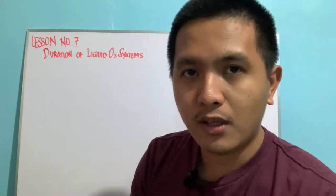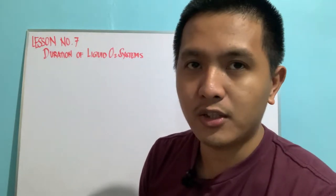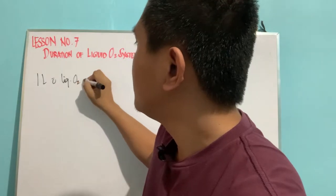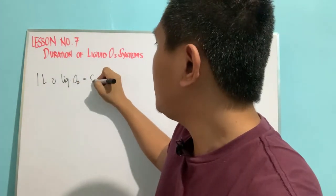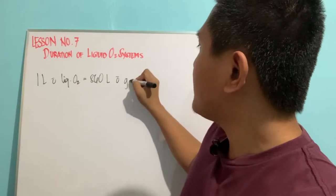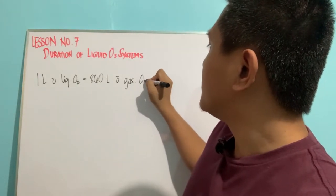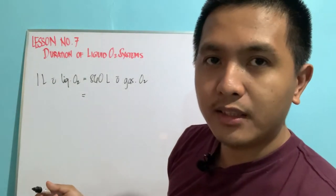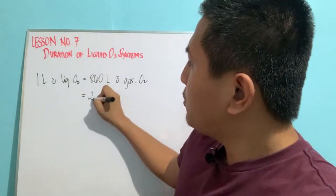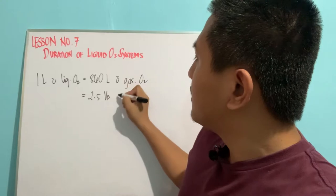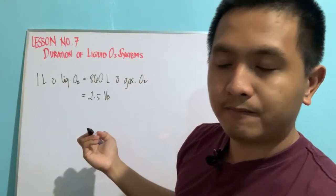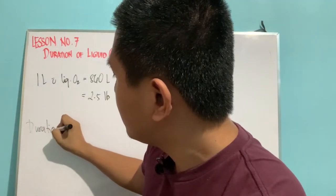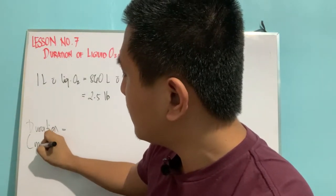Some things to remember when dealing with liquid oxygen system calculations: one liter of liquid oxygen is equal to 860 liters of gaseous oxygen. Remember also that one liter of liquid oxygen is equal to 2.5 pounds of gaseous oxygen.